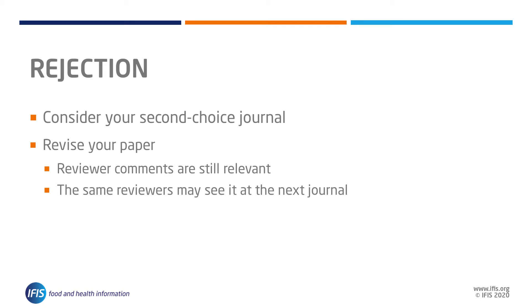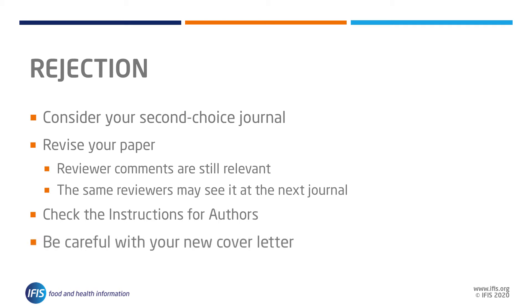Even in reasonably large research fields, there is a chance that the same reviewers who saw your paper at the first journal will be asked to review it at the new journal. It will not reflect favorably on you if you have not acknowledged or considered any of their comments from the first round of reviews. Check that the format of your paper meets the submission criteria of the new journal, and if you wish, write a cover letter explaining the relevance of your paper — being sure to address the correct journal editor and the correct journal name.